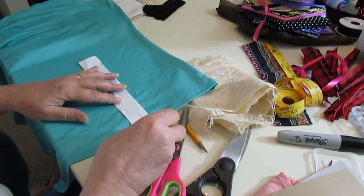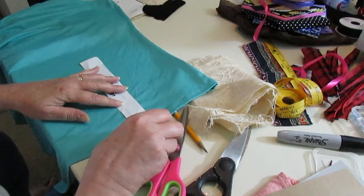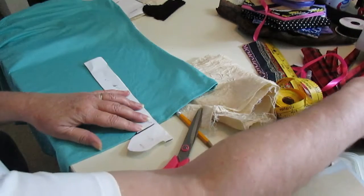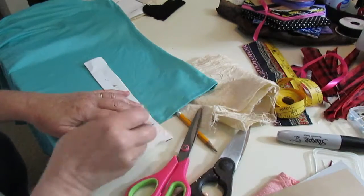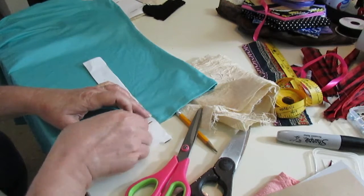Then I have my jersey knit which I use for the stocking and I cut two per leg. Remember there are two legs and there are four sides total, so there's two sides per leg.